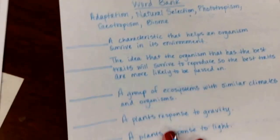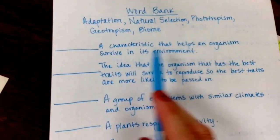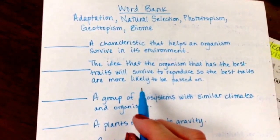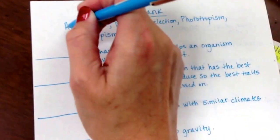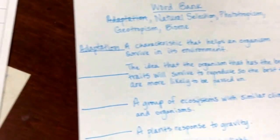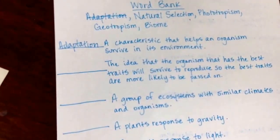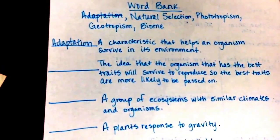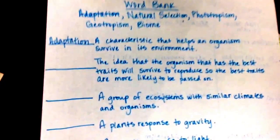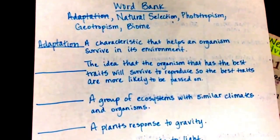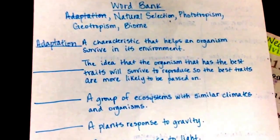So we're going to use those words to fill in these definitions. A characteristic that helps an organism survive in its environment. Out of those choices which would better fit for that definition? I'm hoping that you went with adaptation. That's what an adaptation is. It helps it survive in its environment. It can be an action which would be behavioral adaptation, or it can be something on the organism that helps it survive, something physically on it like the spines of a cactus or the waxy coating of a cactus that keeps water in.